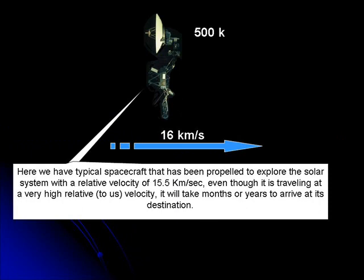Here we have a typical spacecraft that has been propelled to explore the solar system with a present velocity of 15.5 km per second. Even though it is travelling at a very high speed, it will take months or years to arrive at its destination.